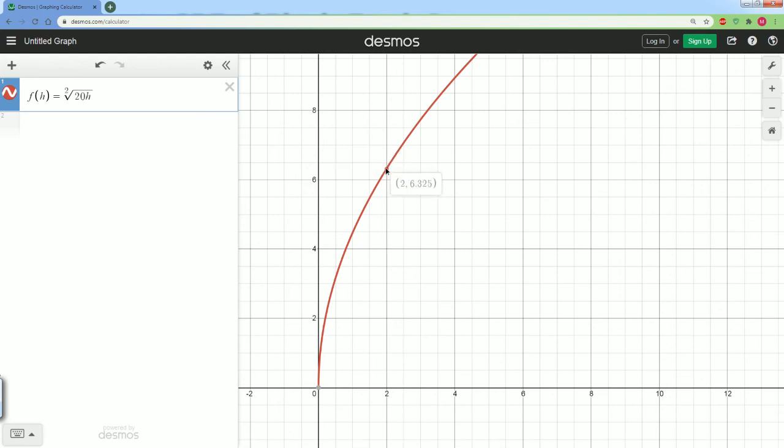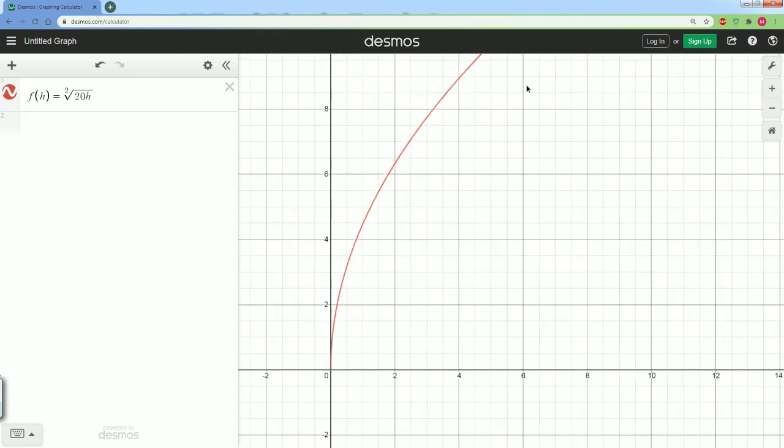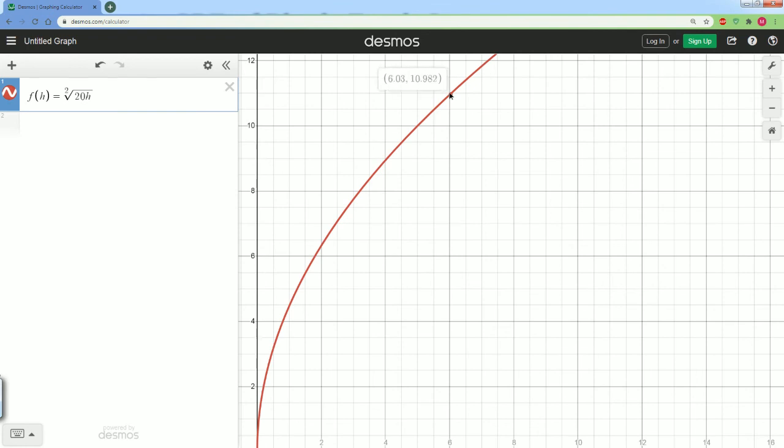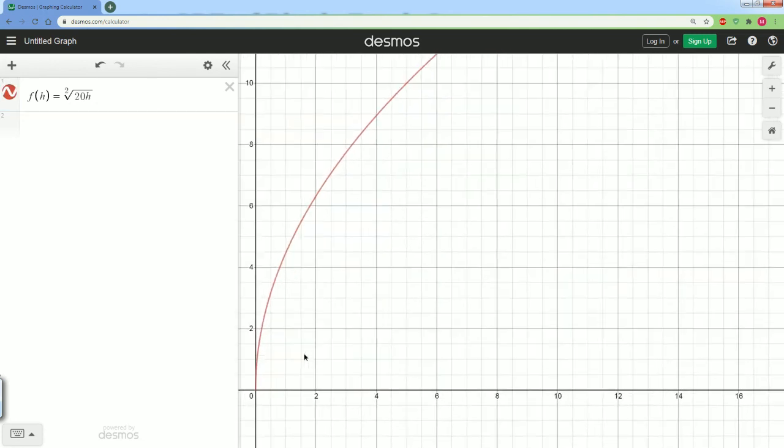But when it's at four, it's at three, and as it reached six, it's at ten something. So notice that the speed is going up. It's not linear, it's growing up. Two is at six point four, at four it's at eight nine, okay that's how it's increasing.